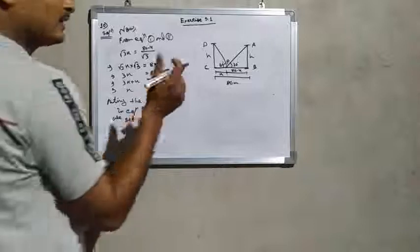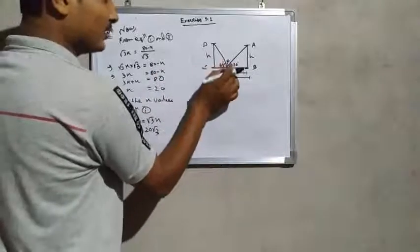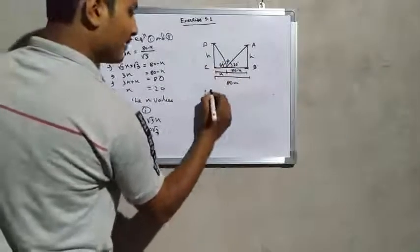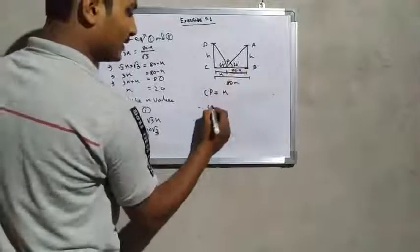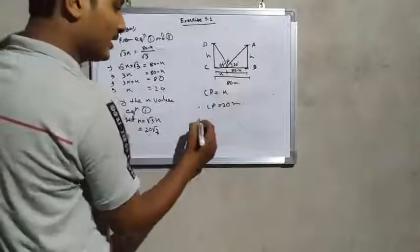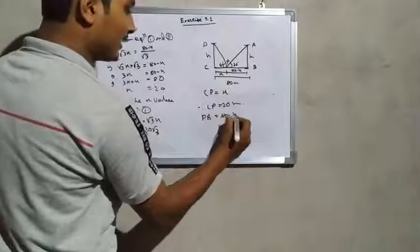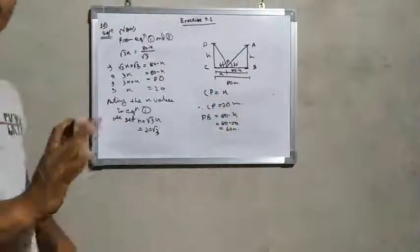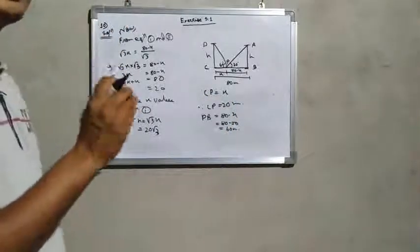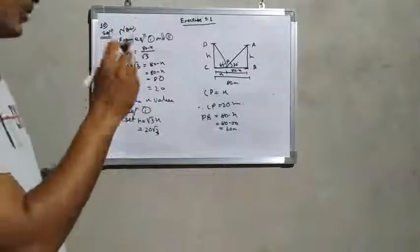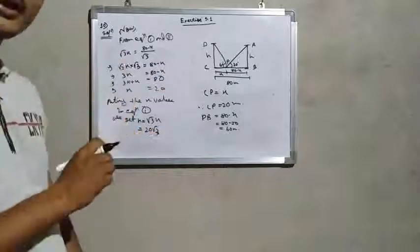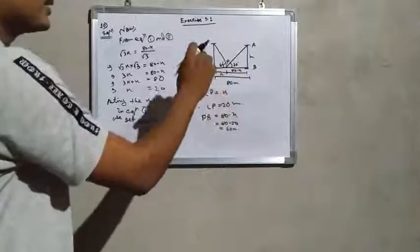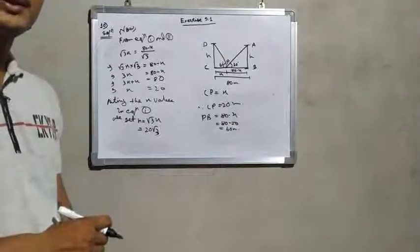Now we find the distance between the point and the bottom of the poles. CP equals x, therefore CP equals 20 meters. Similarly, PB equals 80 minus x, so 80 minus 20 equals 60 meters. In summary: the height of the poles is 20√3 meters, the distance CP is 20 meters, and the distance PB is 60 meters. Thank you.